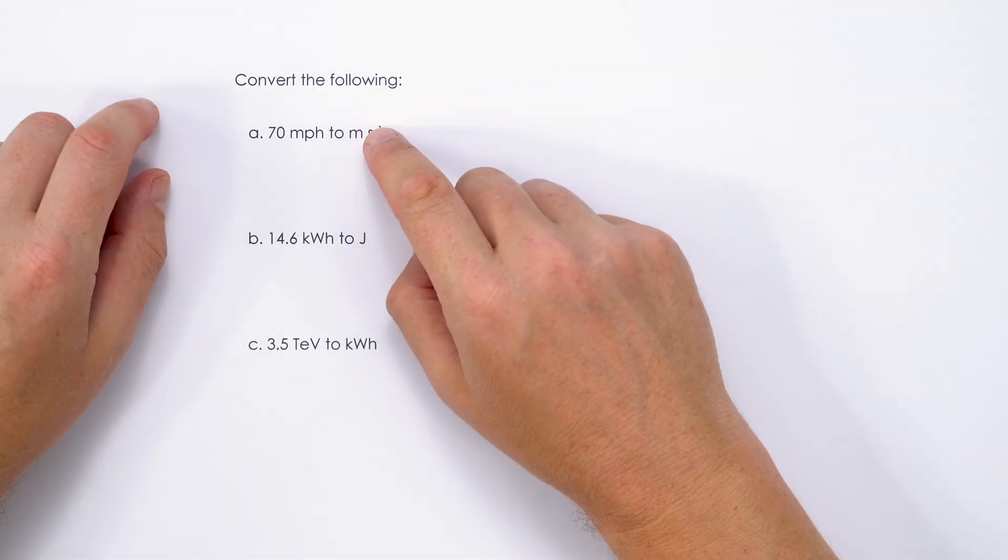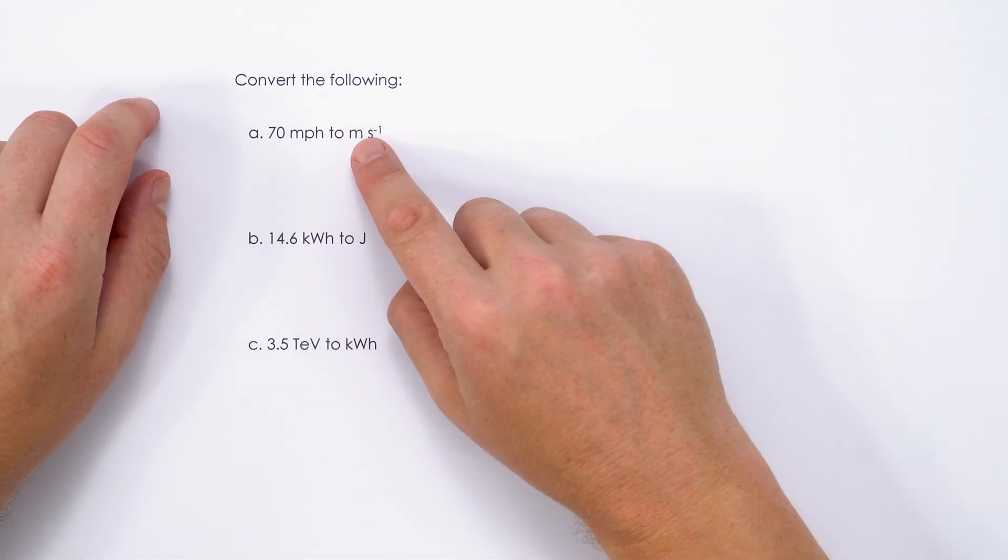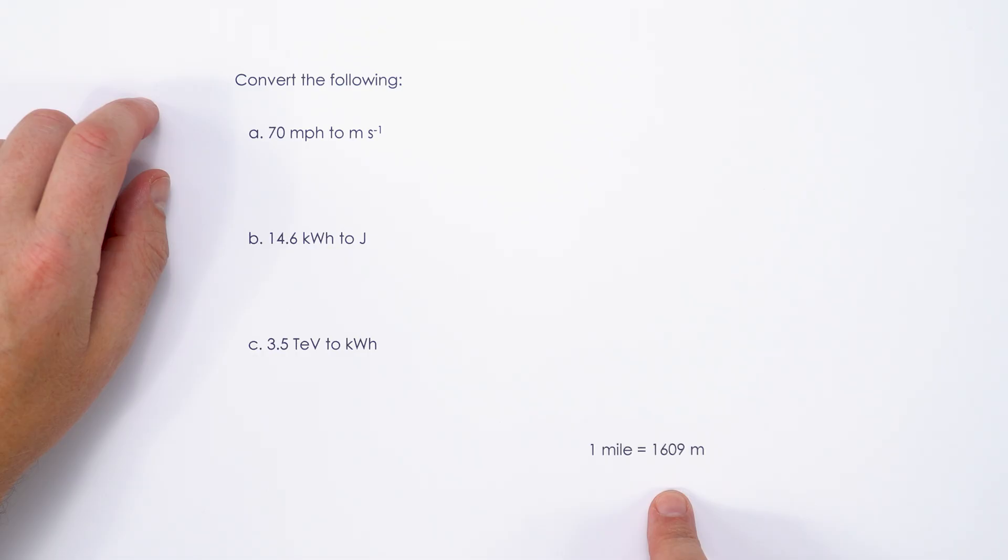Can you remember how to convert between miles per hour and metres per second? In the first question we're going to convert from 70 miles per hour to metres per second, and we've been given the information down here that one mile is 1,609 metres.